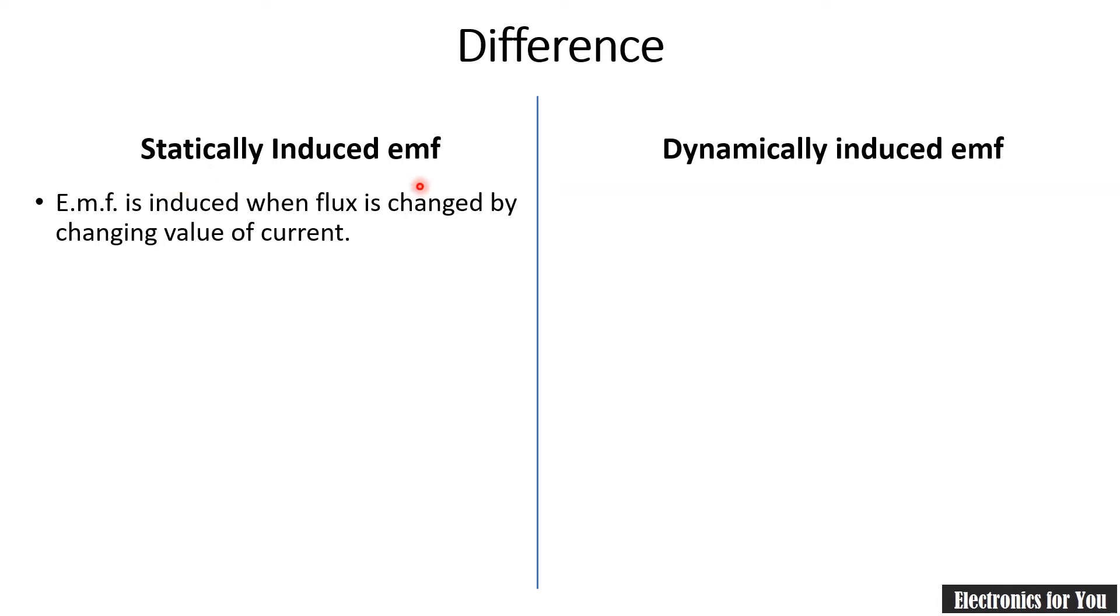In statically induced EMF, the EMF is induced when flux is changed by changing the value of current. Here is the diagram explaining the concept. You can see that the AC supply is applied here. AC supply changes its magnitude, and that's why there is a change in current, and therefore the EMF is induced in the coil.